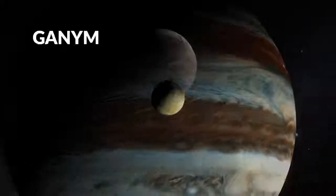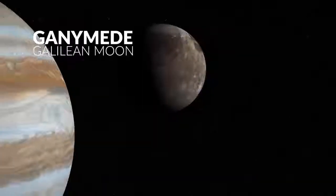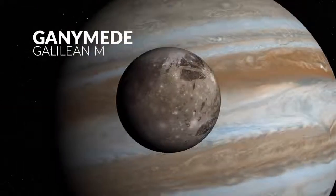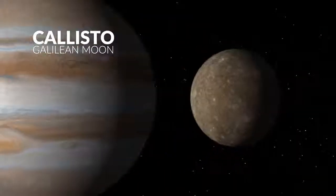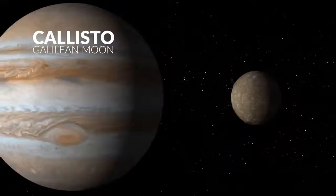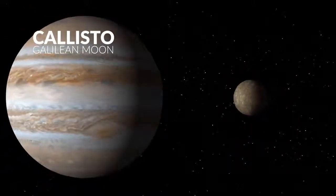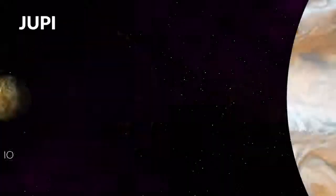The largest moon, Ganymede, is a cold and rocky world with a diameter over 3,200 miles wide. And last of all, the darkest and farthest out of the Galilean moons, Callisto, is the most heavily cratered object in the solar system.